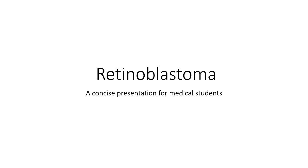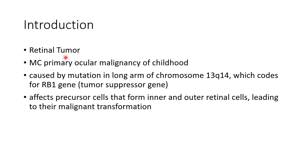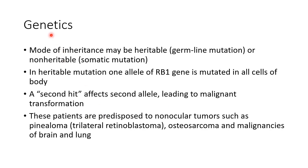Hello guys, this is Indian Medico. In this video we are going to see about retinoblastoma. Retinoblastoma is a retinal tumor — it is the most common primary ocular malignancy of childhood. It is caused by mutation in the long arm of chromosome 13, which codes for the RB1 gene, a tumor suppressor gene. It affects precursor cells that form inner and outer retinal cells, leading to their malignant transformation.